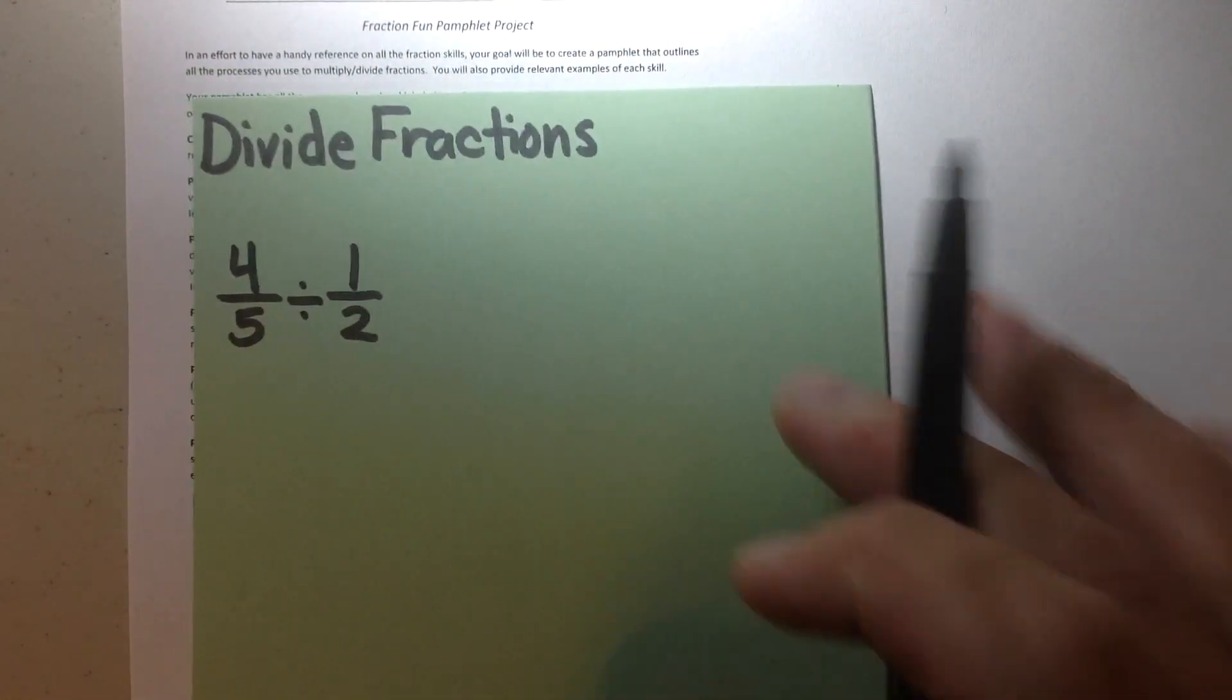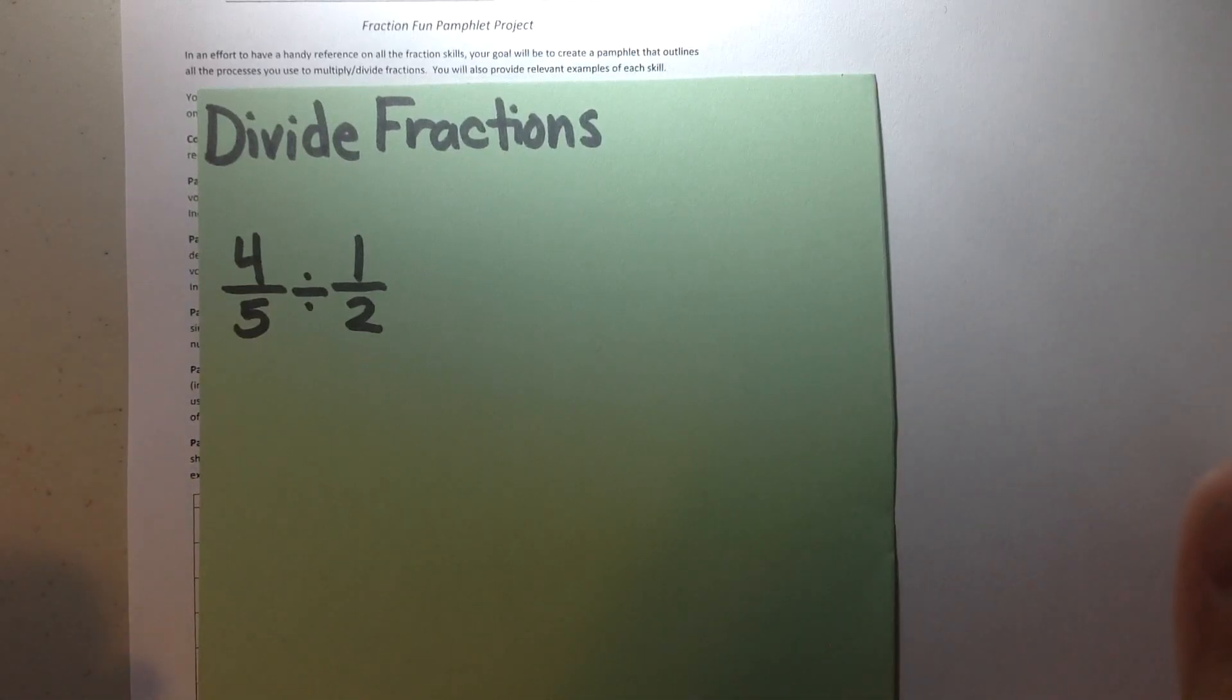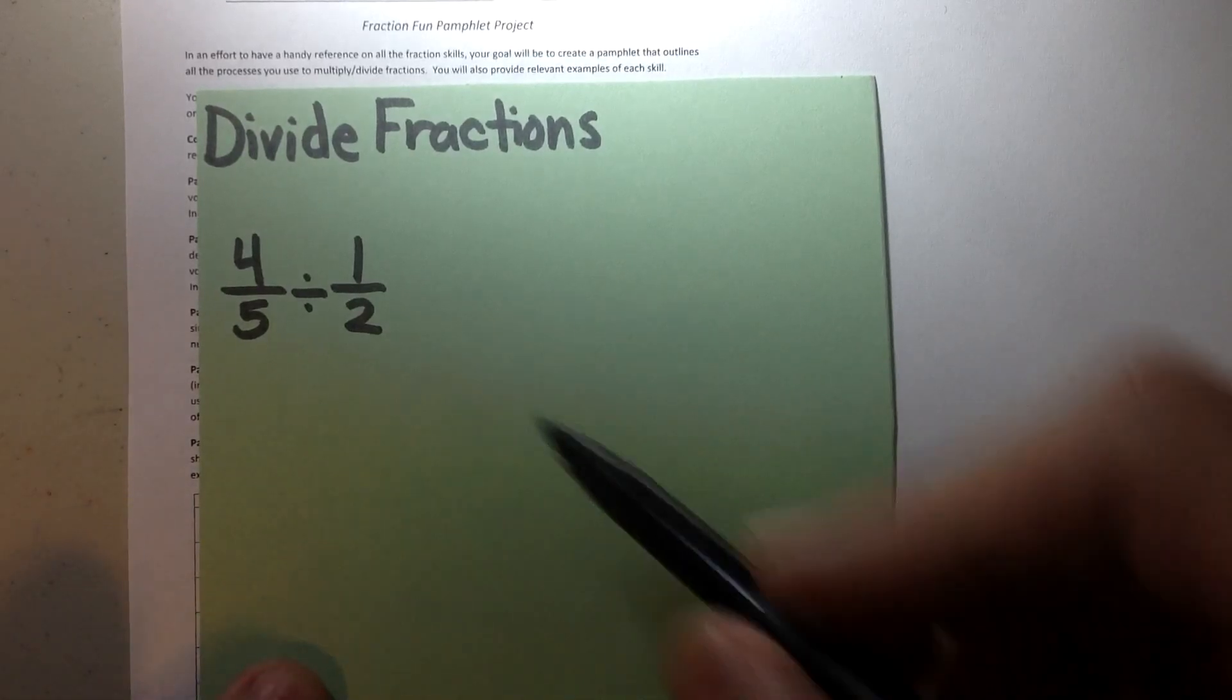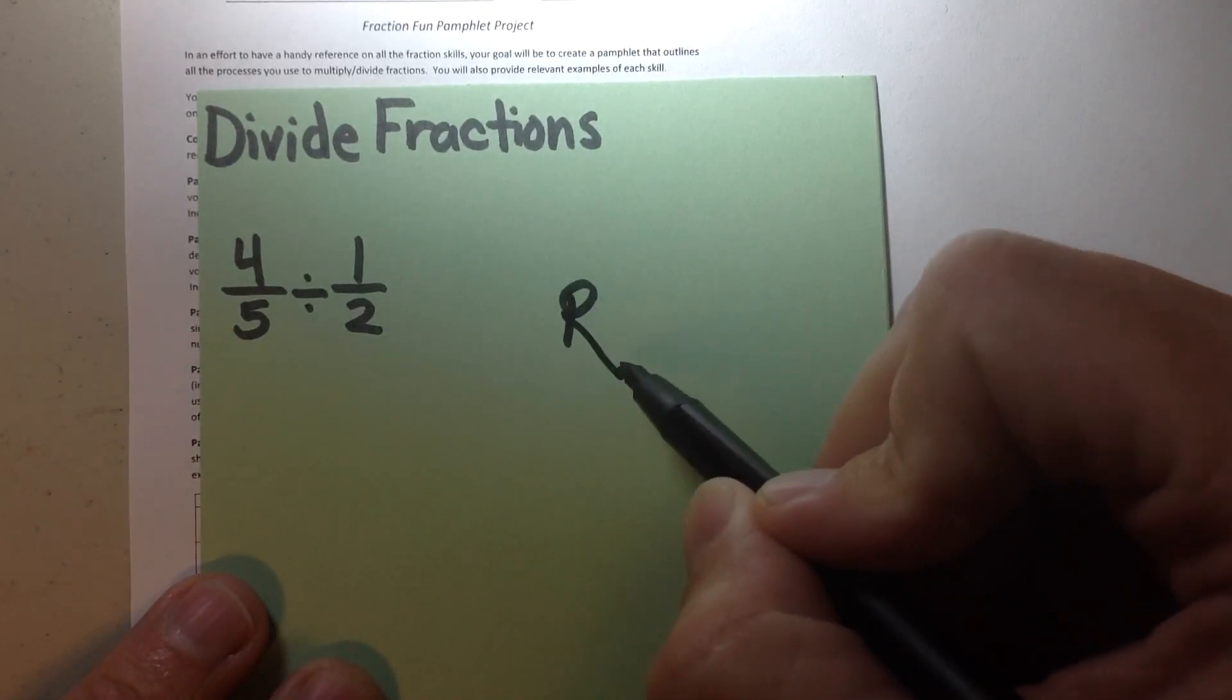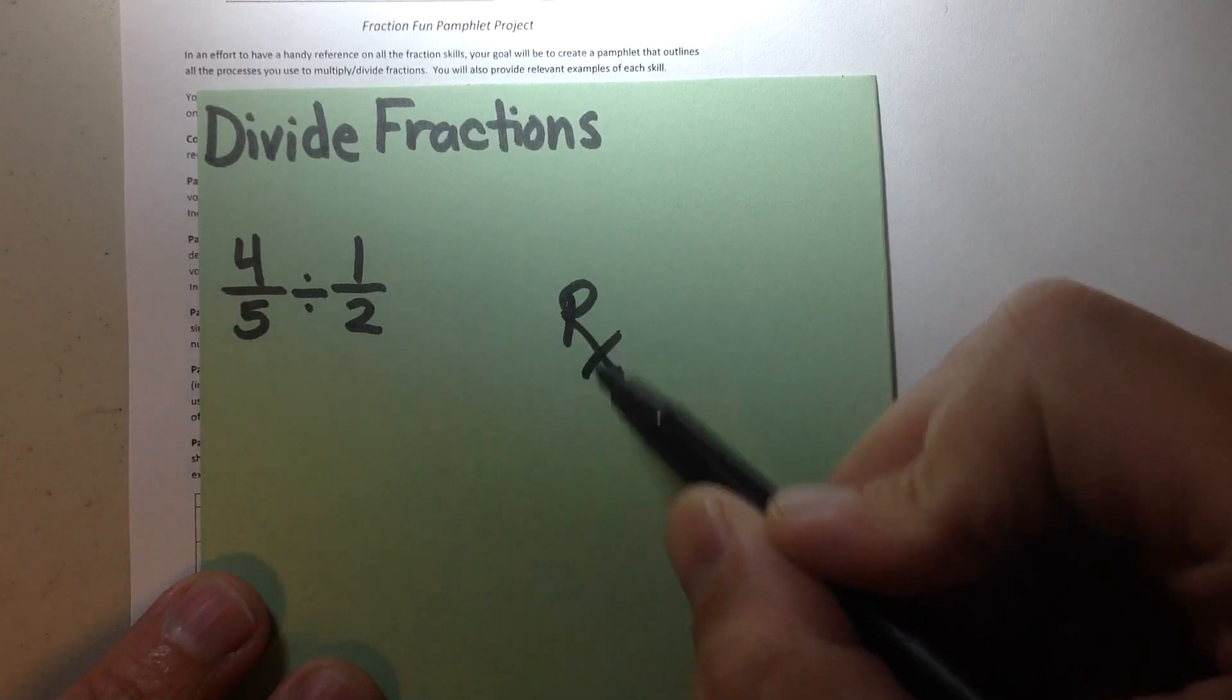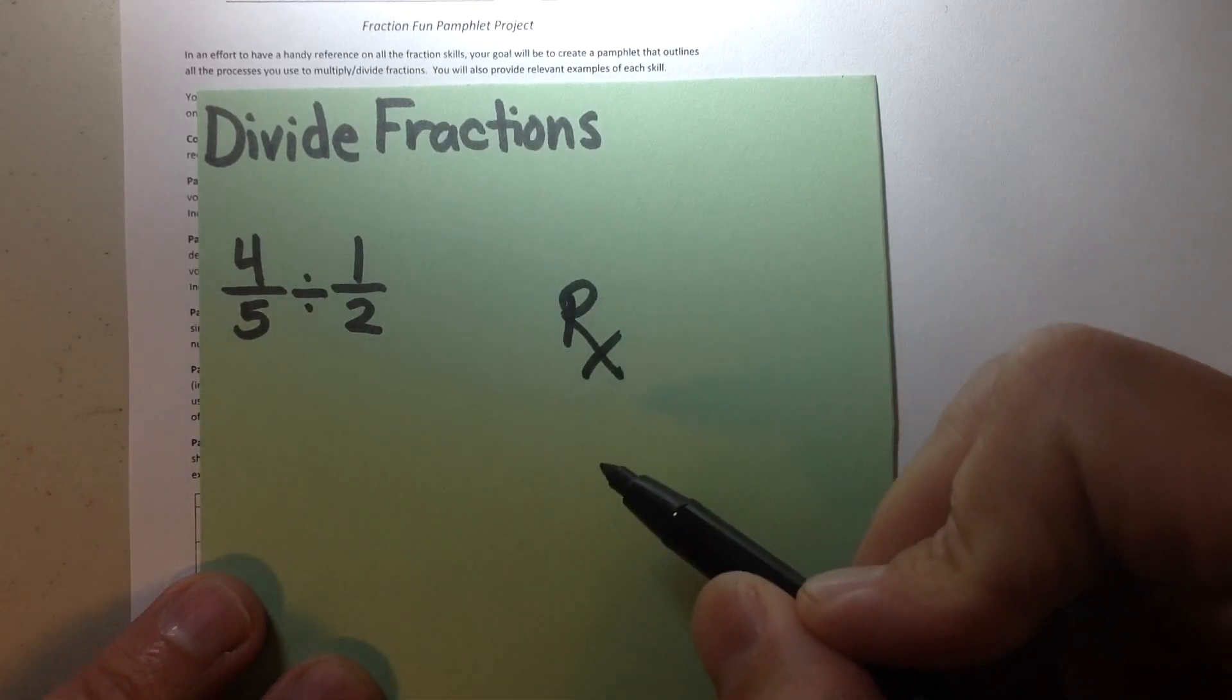The final page or the back of your project is how to divide fractions, which is what we've done most recently. And you guys know that we've come up with a couple of different processes. We talked about the prescription for success, which is to remember, to reciprocal the right fraction and then multiply.